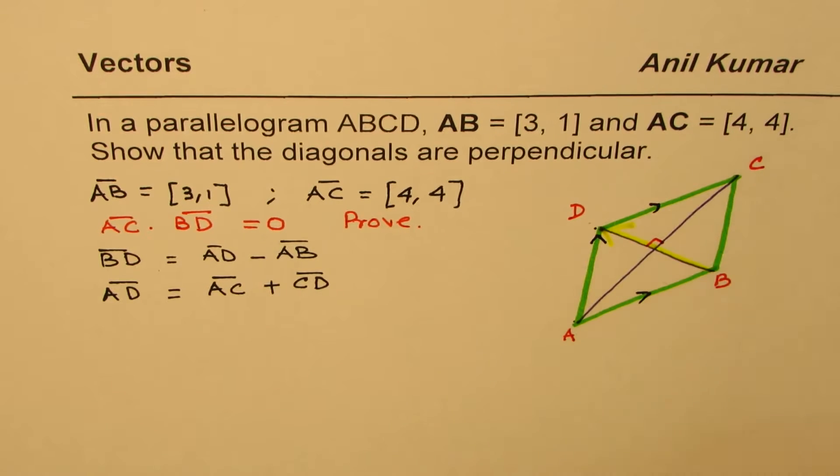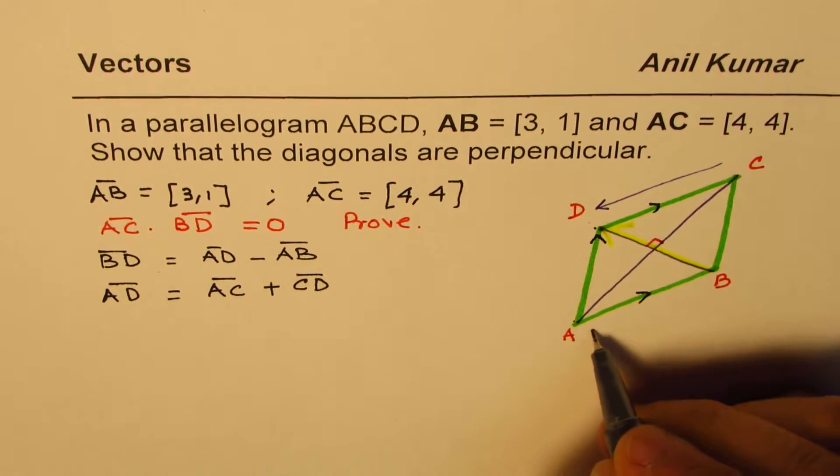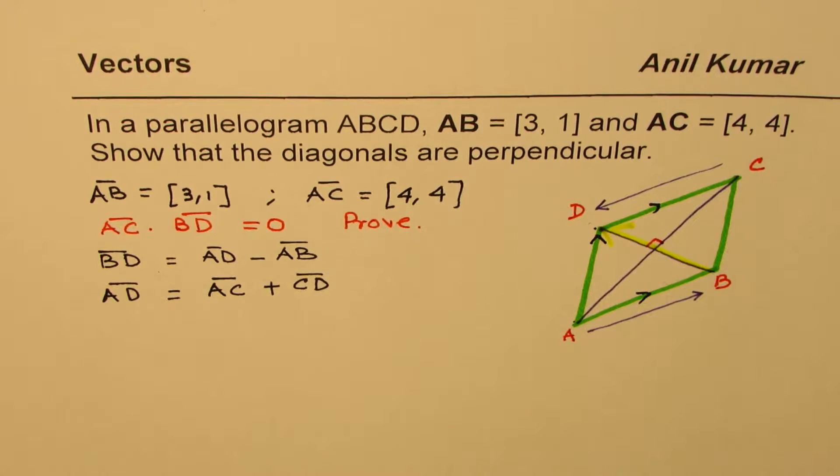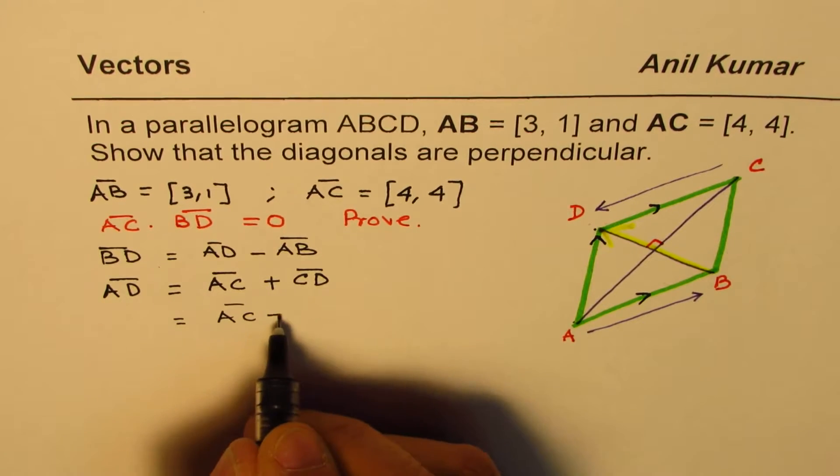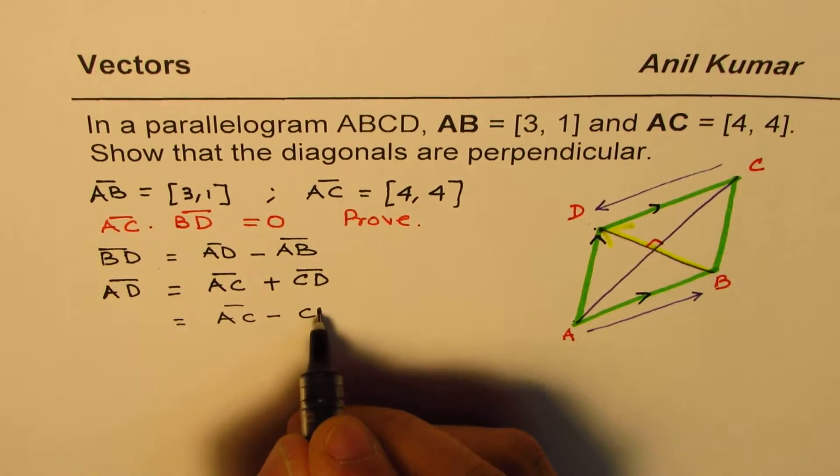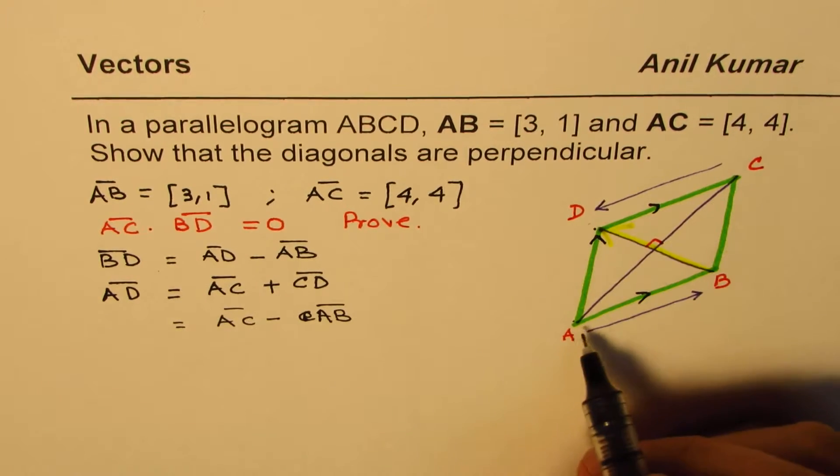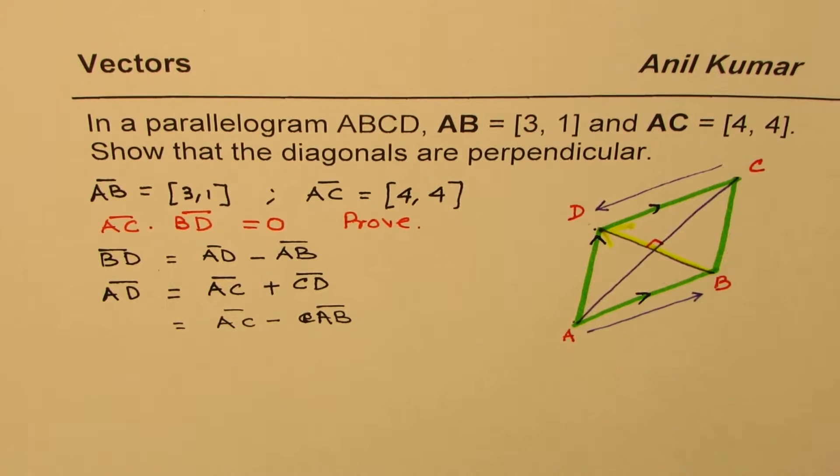Now C to D is minus of AB because they are in the opposite direction. C to D is like this, and A to B is like this. So C to D is minus of AB. So I'll just change this. We'll write this as A to C minus of AB. C to D is negative of this. And these two things we know, so we can use what we know and then find the value of A to D.